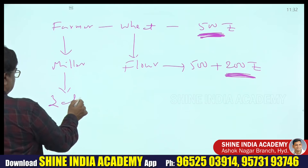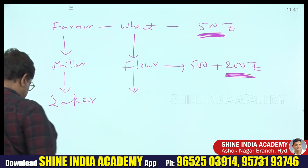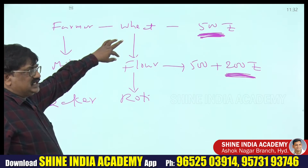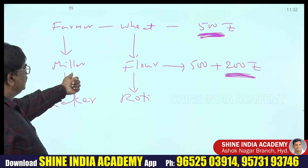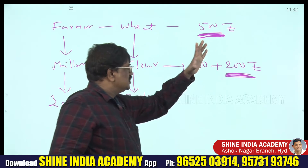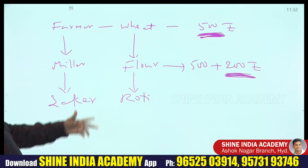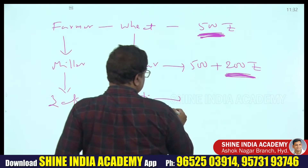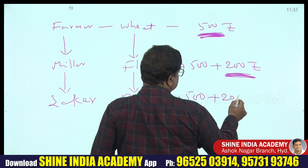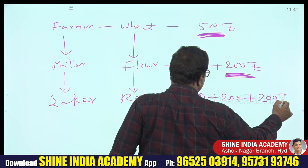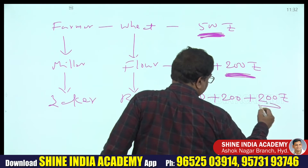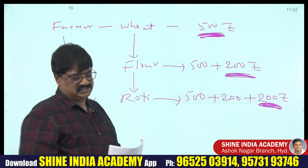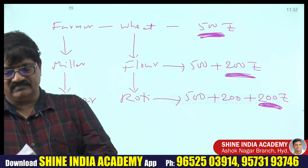The baker converts flour into roti, adding more value. At the shop stage, roti must be packed — another 100 rupees of value is added. So the values are: wheat 500, flour 200, roti 200, shop 100. According to the definition, in national income calculation, only the final value is taken, not former values.